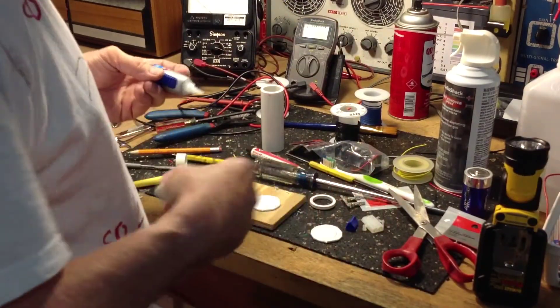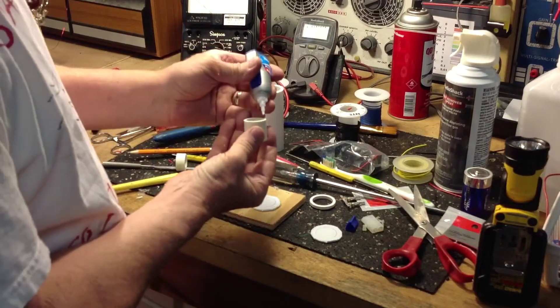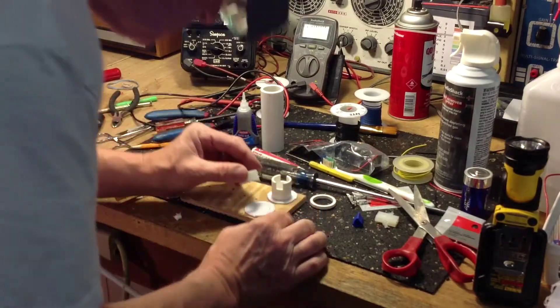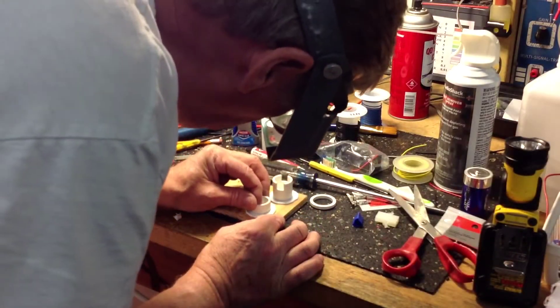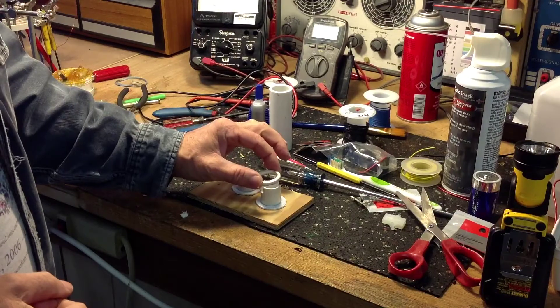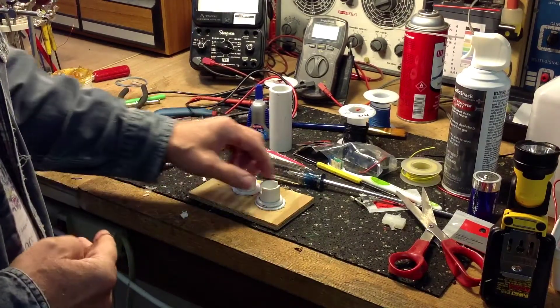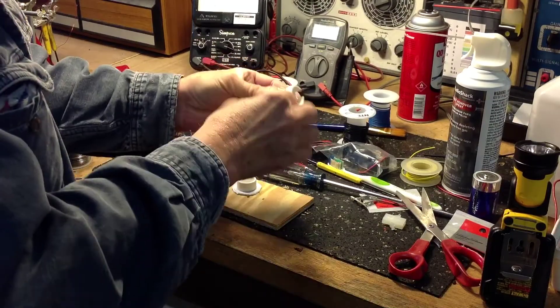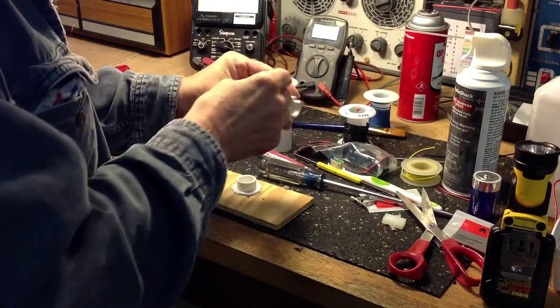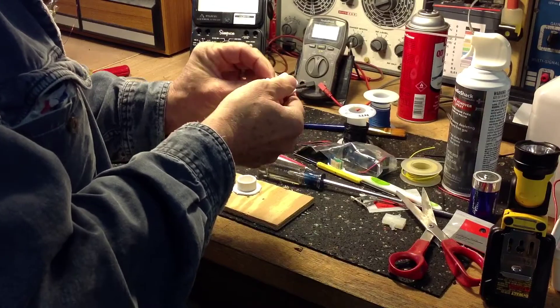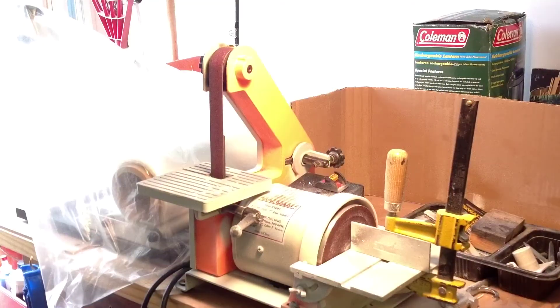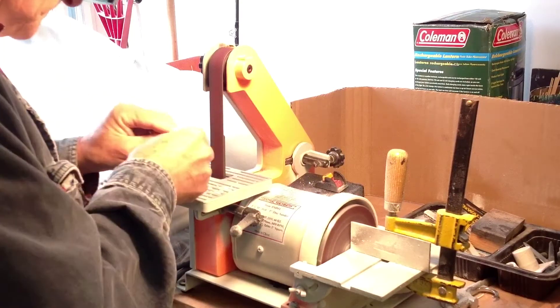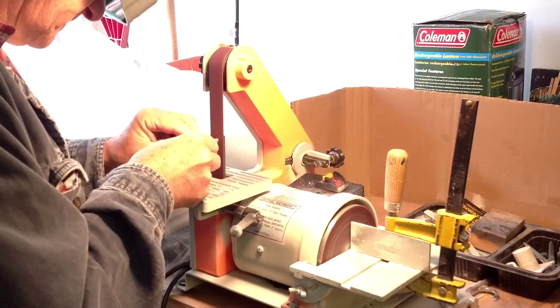Now we're ready to glue that piece to an end cap along with the bottom end piece as well, and I'll use super glue for that. Okay, the glue is dried, and I'm going to use a little piece of 1-inch PVC pipe, a scrap piece, as a guide to round off these end caps so that they fit the barrel of the body perfectly.